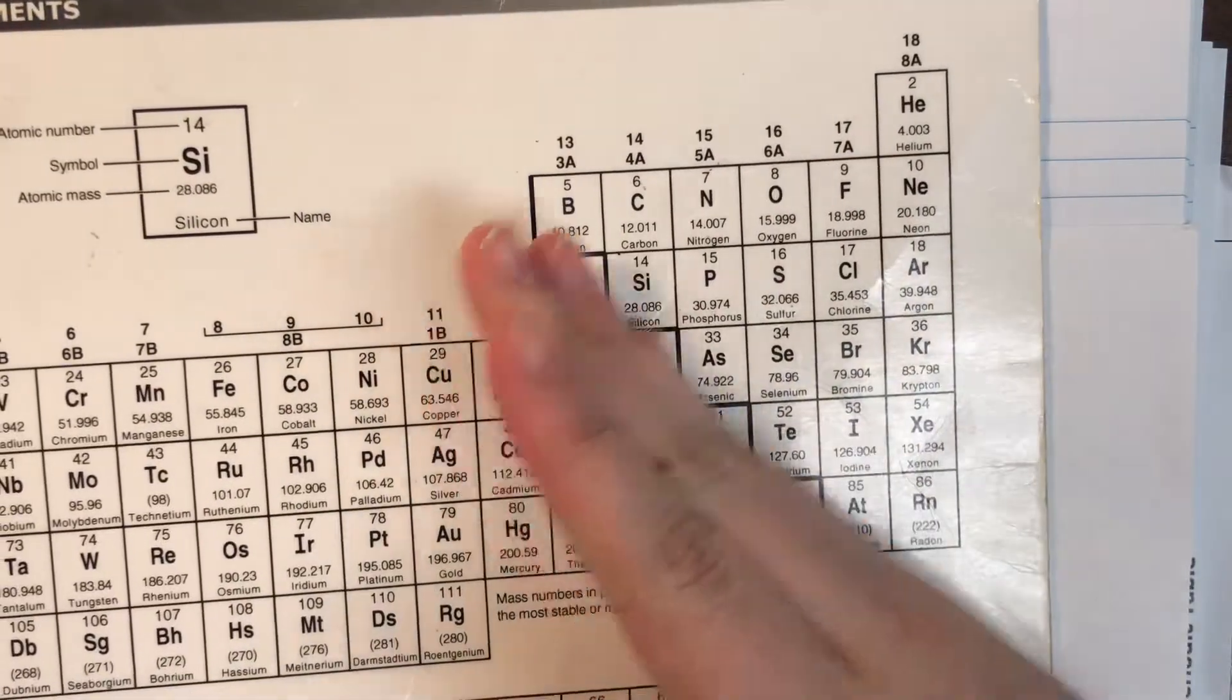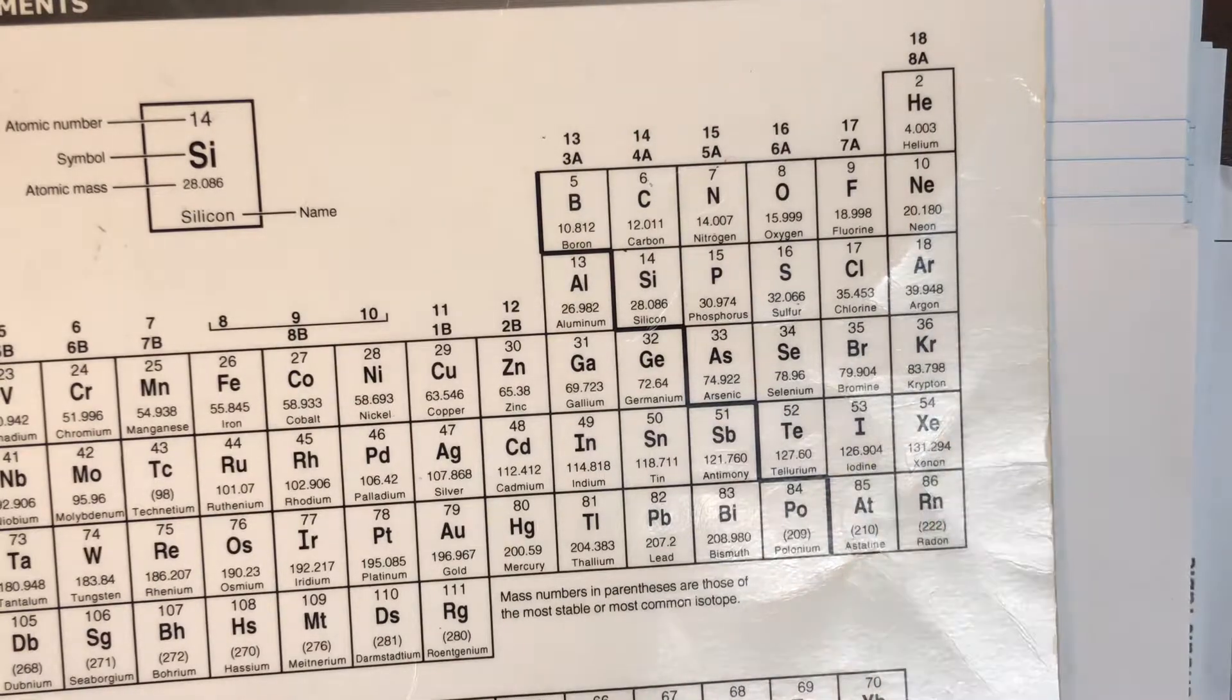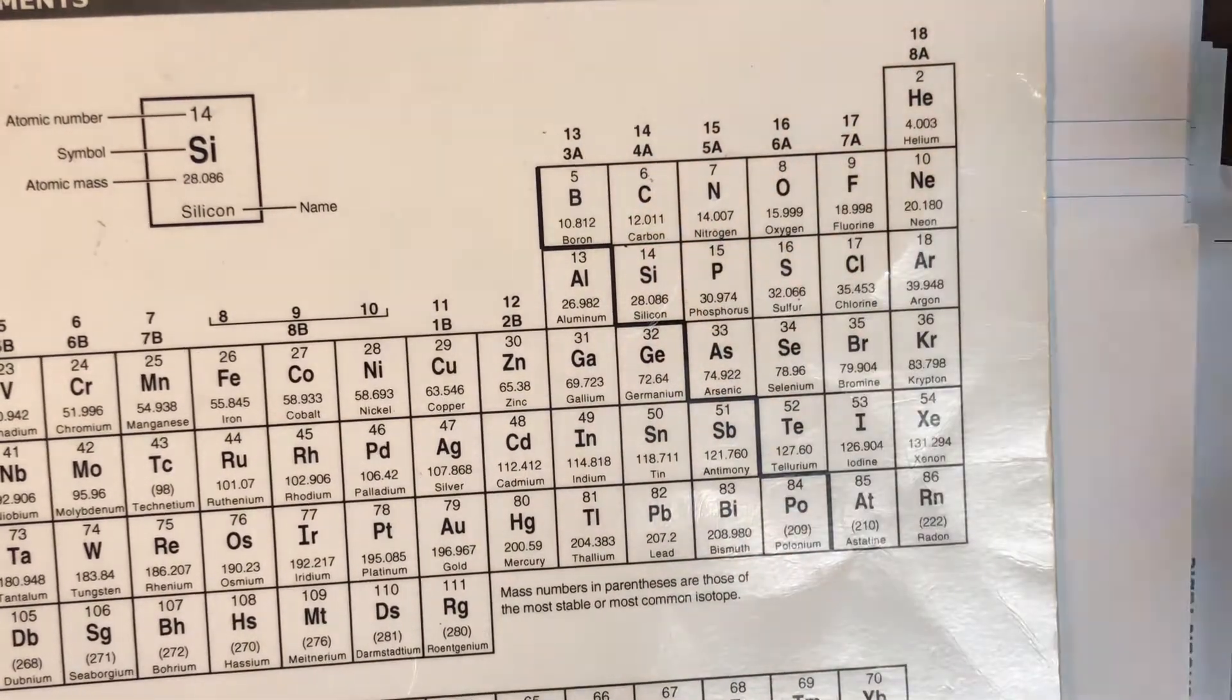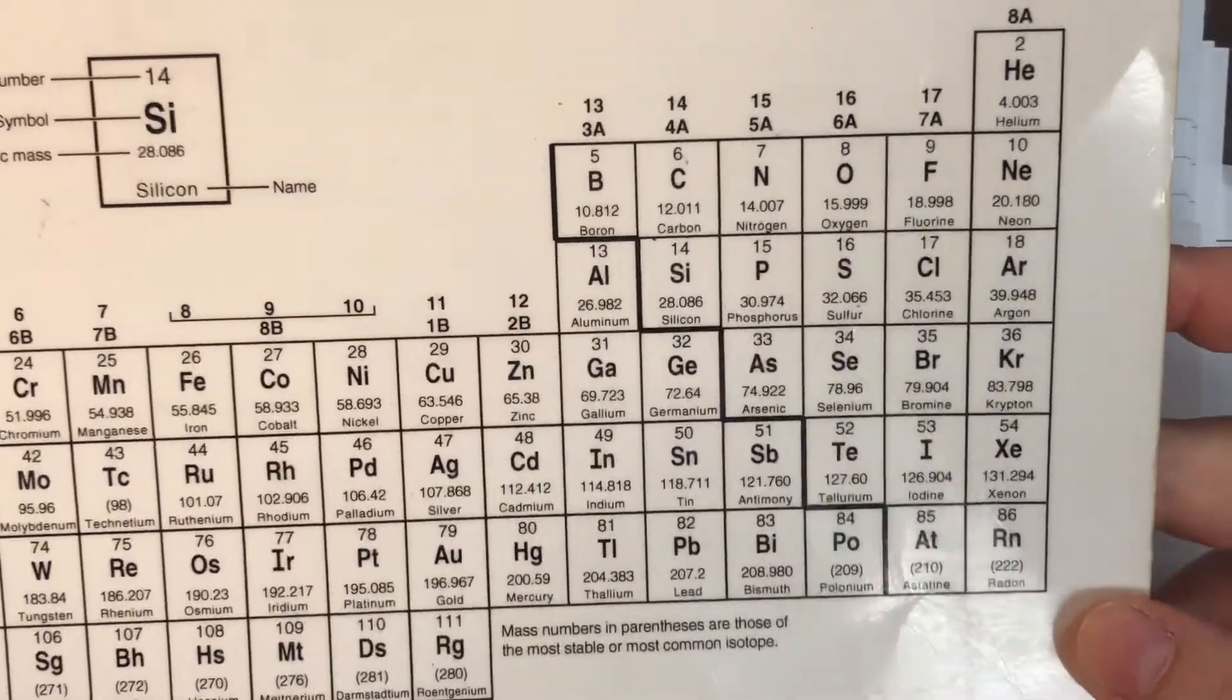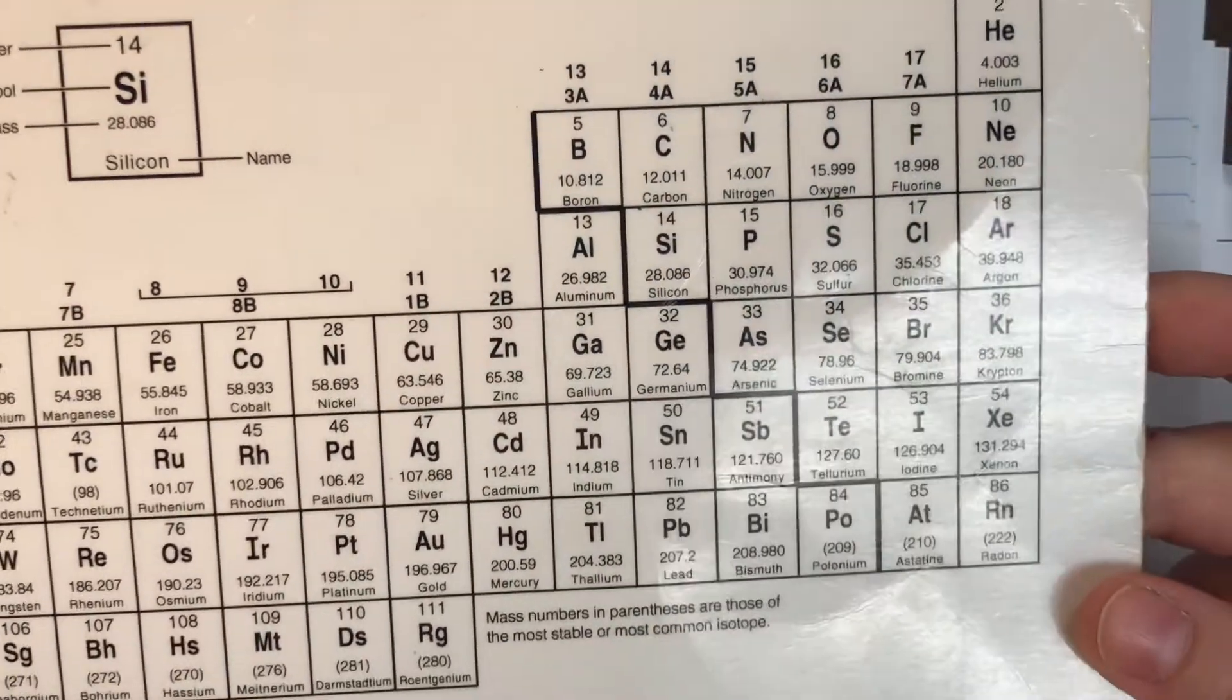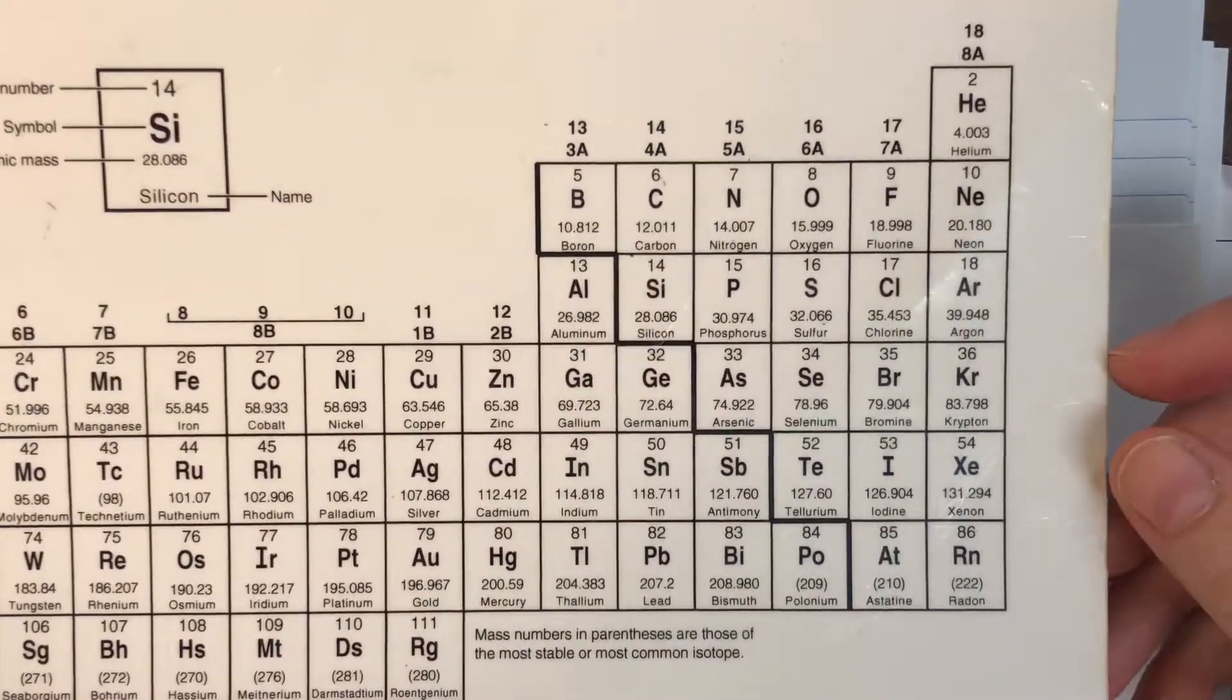Remember that your non-metals are going to be to the right of that stair step line on the periodic table, and we have a very limited amount of non-metals that are actually available that can bond. So we have a small number of elements to choose from, and these are all going to be elements that have more than four valence electrons.